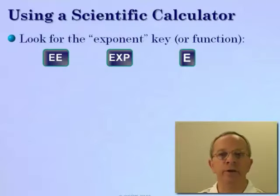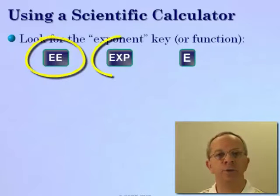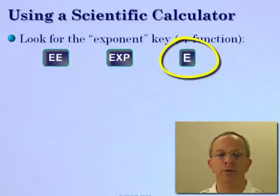Now, using a scientific calculator, we'll have to watch for the exponent key. It'll vary on different calculators. You'll either have the EE or the EXP, or in some cases, just an E key for your exponent.